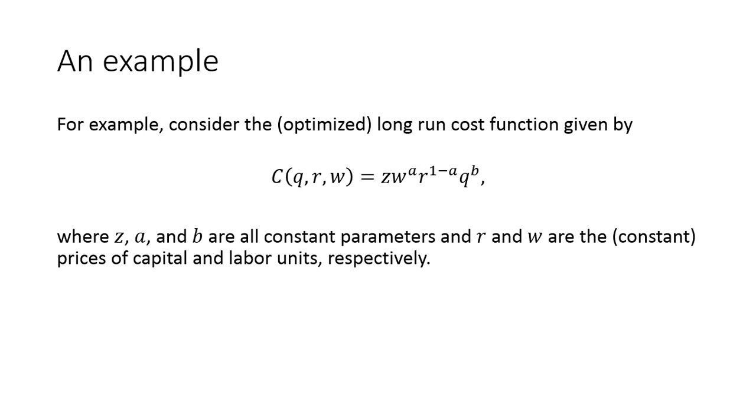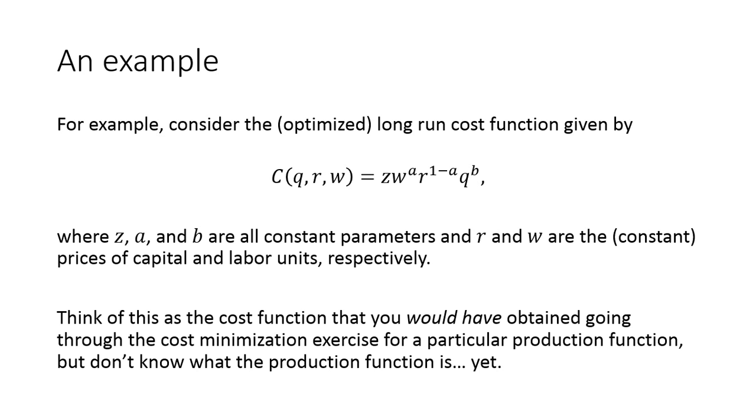So here's an example where we've directly specified the cost function. The cost is a function of my input prices and output. And z, a, and b, these are all constant parameters of the model here. I want you to think of this as the cost function that you would have obtained if you've gone through the cost minimization exercise with some production function, some corresponding production function, which we don't know what the production function is. But our objective is going to be to use the information built into this cost function to recover the production function or to recover the technology.